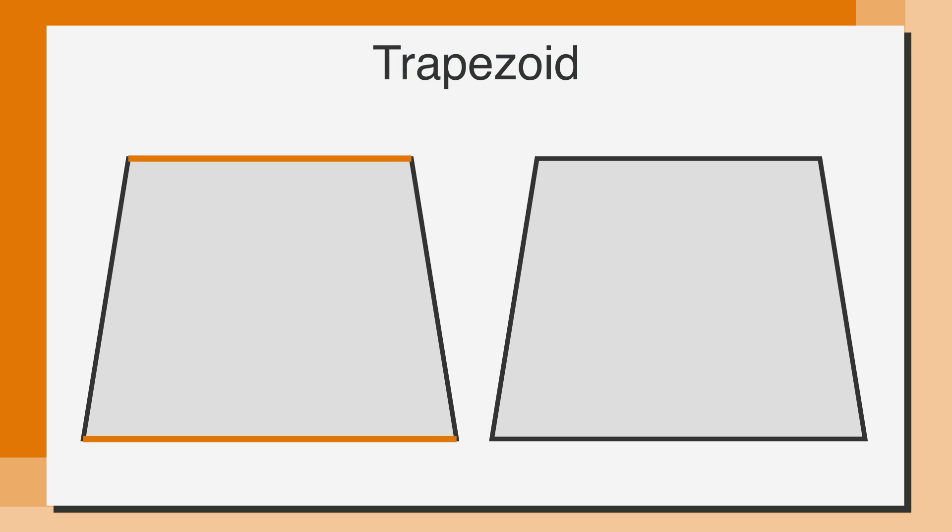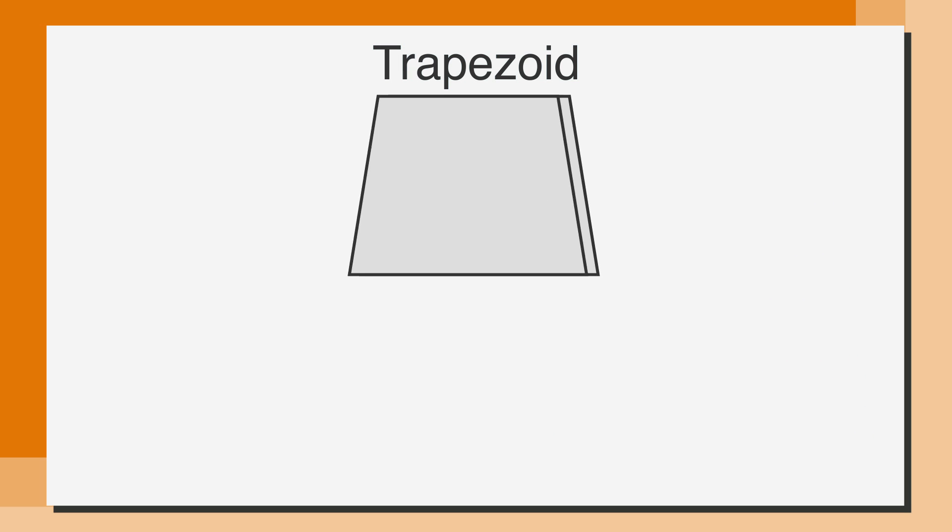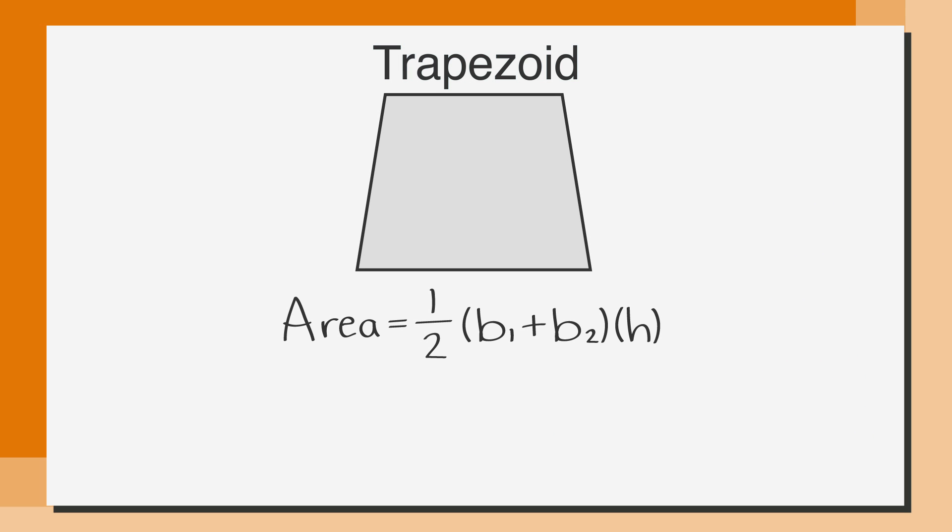These sides are then connected by lines that aren't parallel or necessarily equal in length. The area of a trapezoid is equal to one-half times the sum of the parallel bases times the height.